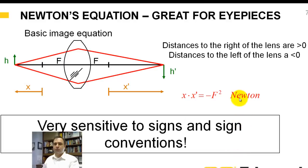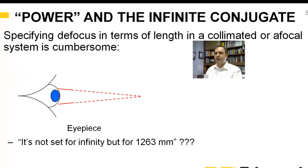Newton's equation is great for eyepieces. And I'm going to talk today and apply understanding Newton's thin lens equation and understanding power talking about eyepieces. It's what I'm comfortable with. Again, this is sensitive to sign conventions. It's a Cartesian coordinate system. Distances to the right of the lens are positive. Distances to the left are negative.